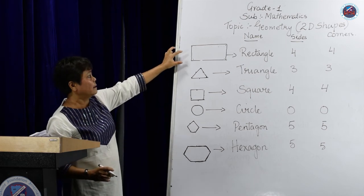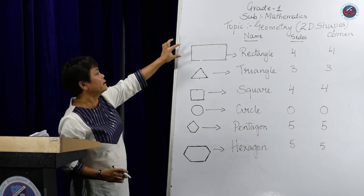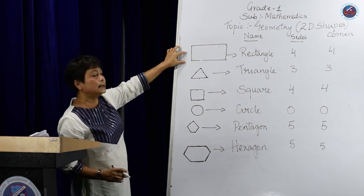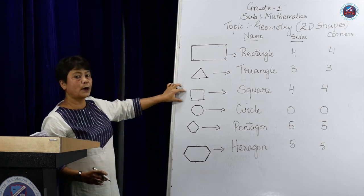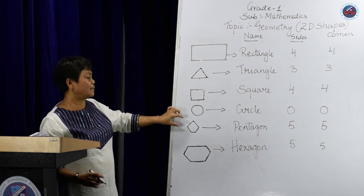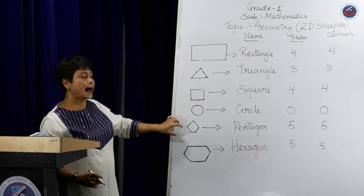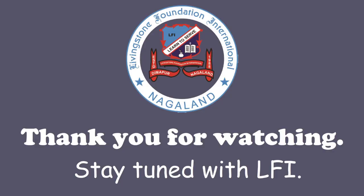So, what are the 2D shapes? Rectangle, the triangle, the square, the circle, the pentagon and the hexagon. That's all for today. I'll see you in the next class. Thank you.